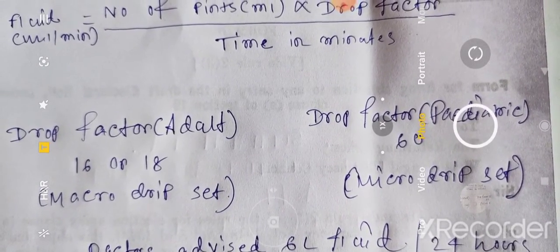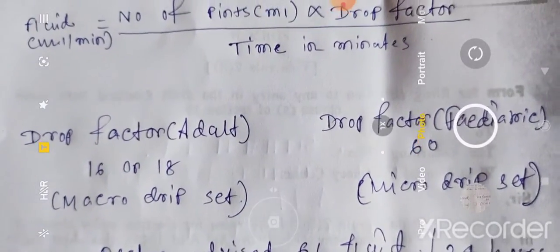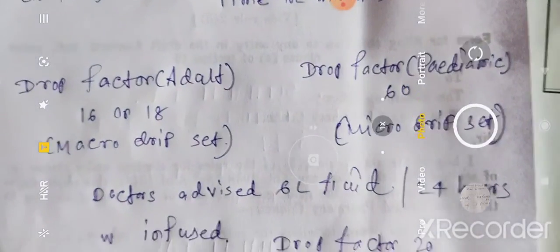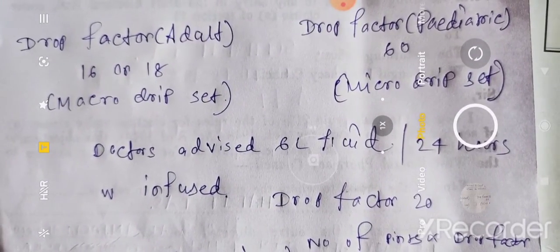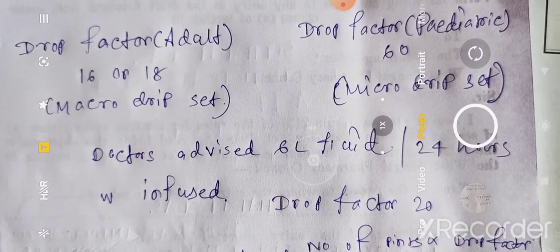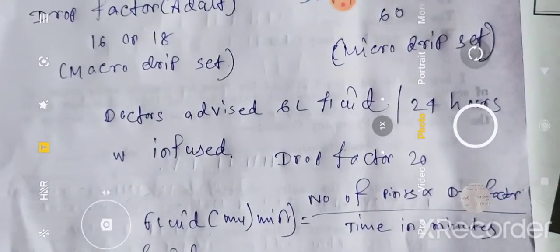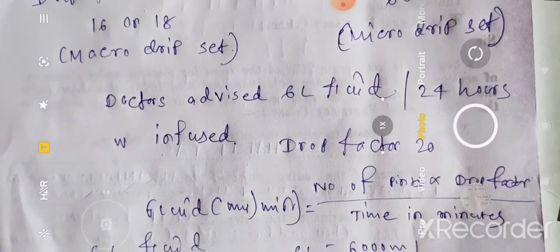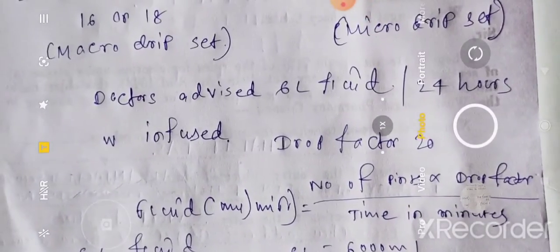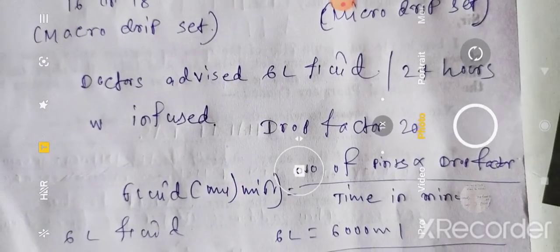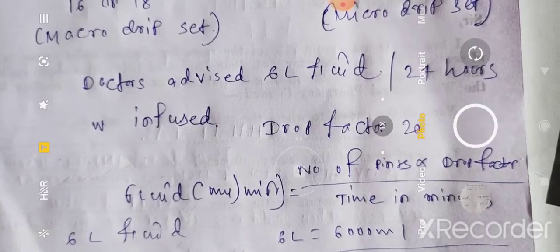For example, we will calculate a problem. मान लीजिए doctor ने advice दिया है: 6 लिटर fluid किसी patient को 24 hours में infuse करना पड़ेगा। आप इसको किस rate पर infuse करेंगे — उसको calculation करना पड़ेगा। Drop factor दिया गया है 20।